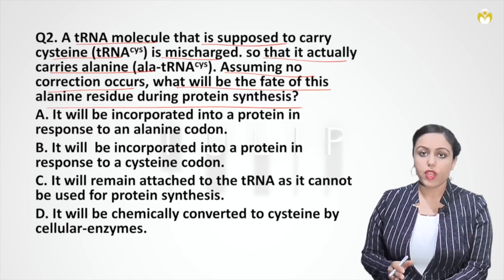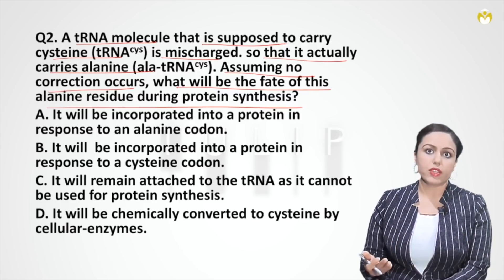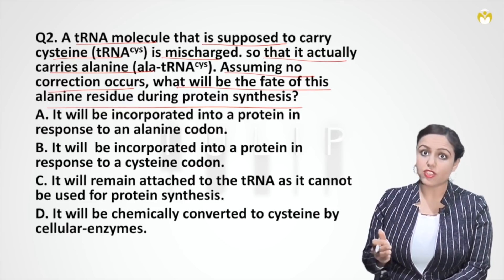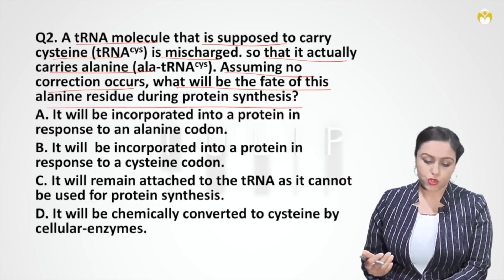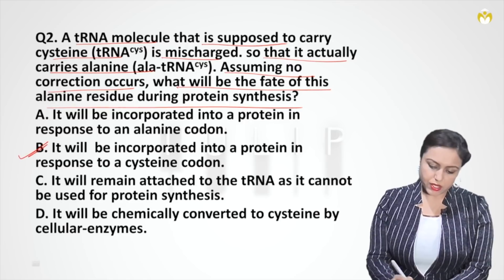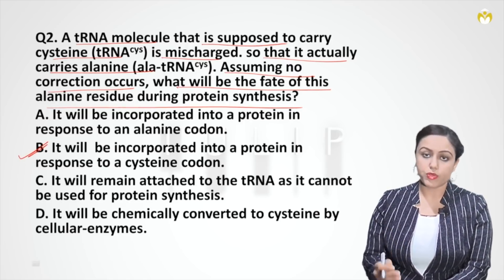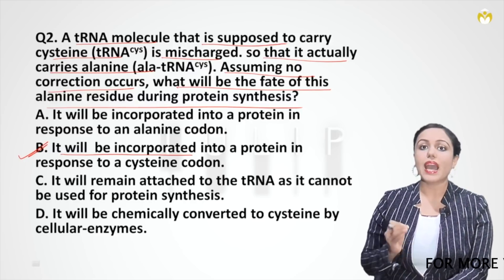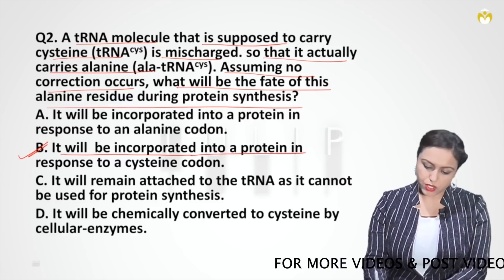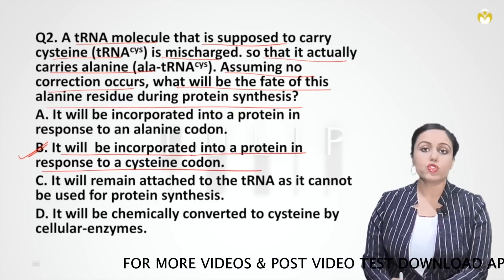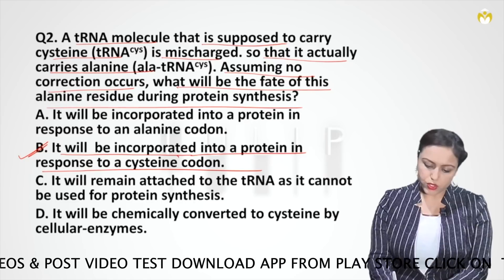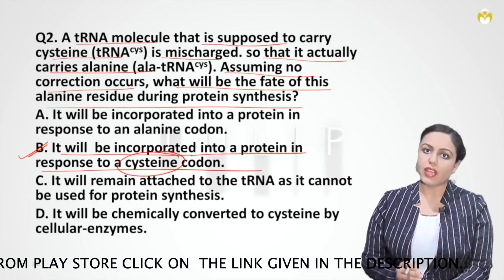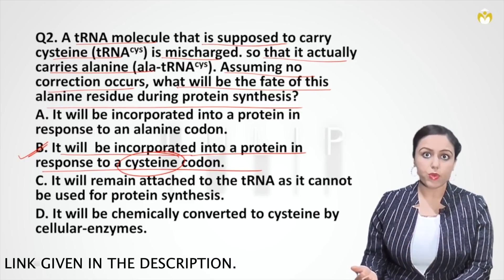Since the codon can see only the anticodon and not which amino acid is attached, whatever wrong or right amino acid is there will be added. So the correct answer is option B: alanine will be incorporated into a protein in response to a cysteine codon. The codon is for cysteine, the anticodon is for cysteine, but the wrong amino acid alanine is what gets added to the protein.